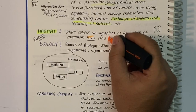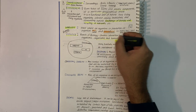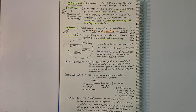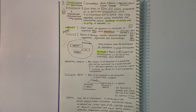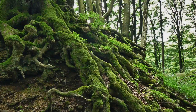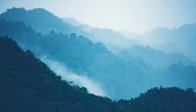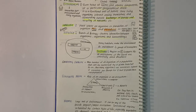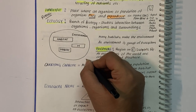Ecology is a branch of biology which studies the interaction between organisms and between an organism and its surroundings. The biosphere is made up of the part of Earth where life exists — from the deepest root systems of trees to the dark environment of ocean trenches, to lush rainforests and high mountain tops.